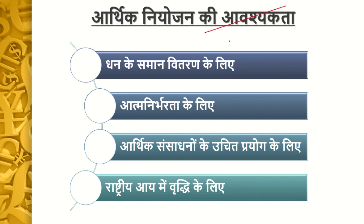We will also see the necessity of Arthik Niyojan — why it is needed. When India became independent, planning did exist before that too, but not in a proper way. The British used planning for their own interests and not for India's benefit. So we will talk about the harm done in this area.